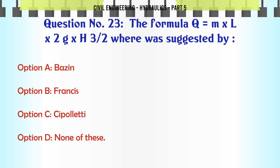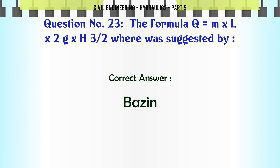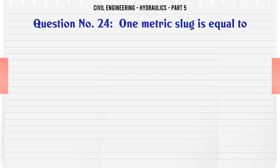The formula Q = M × L × √(2g) × H^(3/2) was suggested by: A. Bazin, B. Francis, C. Cipoletti, D. none of these. The correct answer is Bazin.